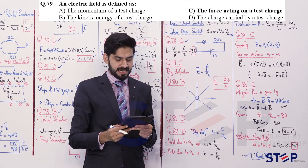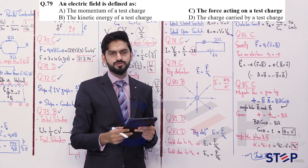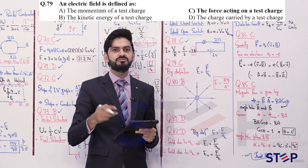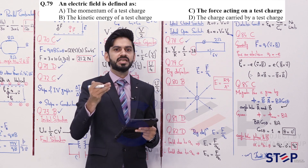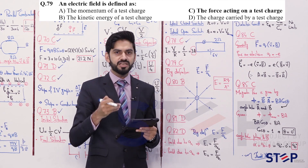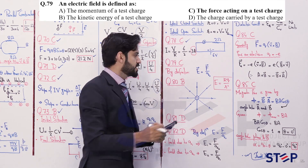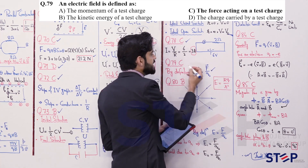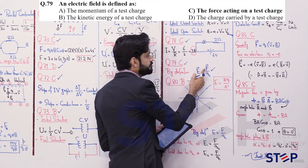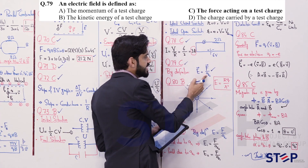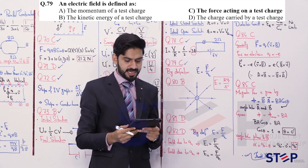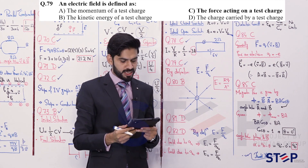Question 79: Electric field is defined as force per unit charge, or force per unit test charge. By definition, electric field = force acting on a test charge. Question 79's answer is option D.